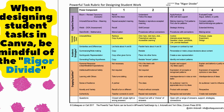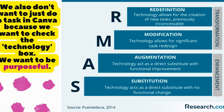Those are the things we can do with Canva to cross that rigor divide. At the very top of the rubric you see evaluate, create, extended thinking, producing, creating. Students can go from simply recalling things to actually creating a project or a video that takes what they've learned and applies it to real life — even showing them a future where they can use and apply these skills in the job market. We don't want to just check that technology box; we want it to be purposeful.